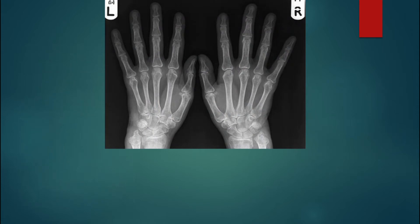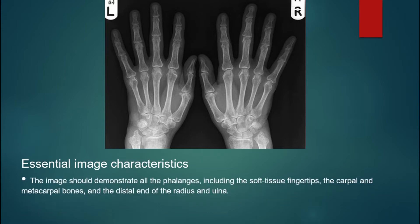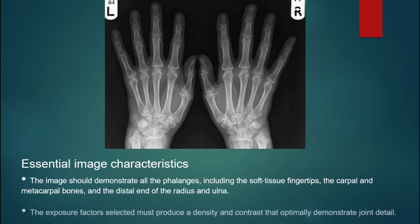Postero-anterior both hands x-ray. Essential image characteristics: the image should demonstrate all the phalanges, including the soft tissue fingertips, the carpal and metacarpal bones, and the distal end of the radius and ulna.